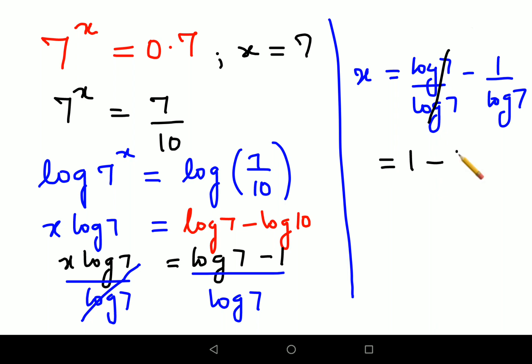That is the value of log 7. When you divide that value from 1, you get the answer as 1.1833. So now your final answer for the value of x is minus 0.1833.